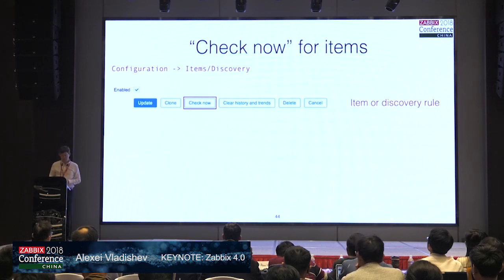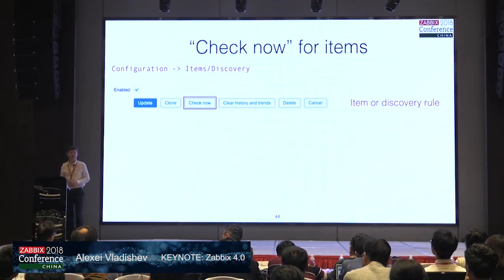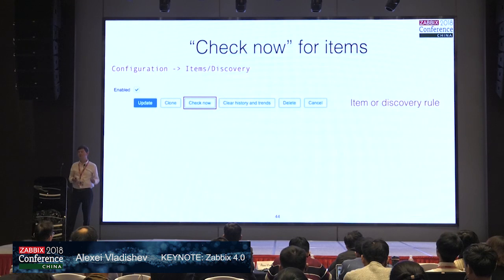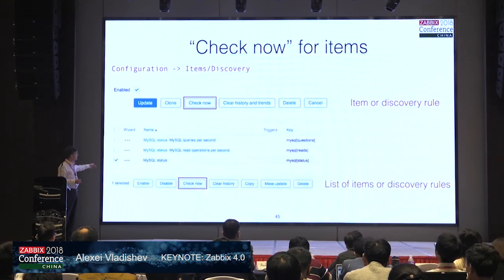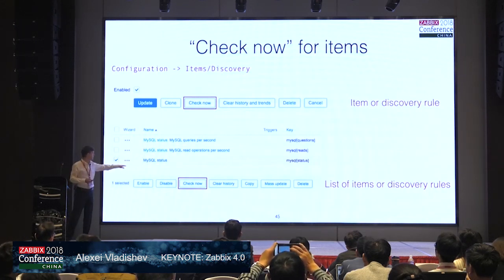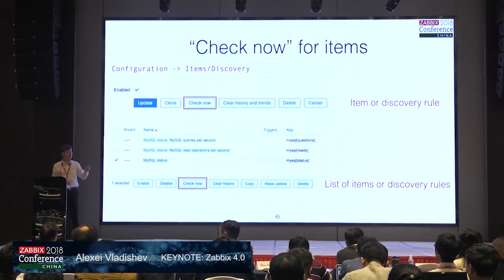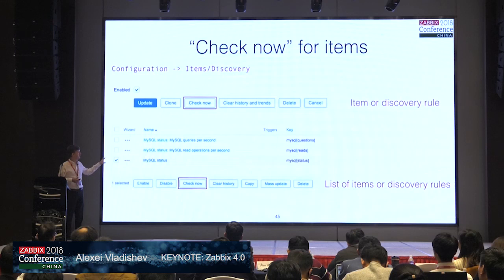In Zabbix 4.0 we introduced a Check Now button for items and for low-level discovery rules. If I want to force execution of an item or a low-level discovery rule, I can go to the Zabbix frontend, press the Check Now button, or select a number of items or low-level discovery rules and do a mass Check Now operation. Zabbix will force execution of those items. Please check the documentation as it has some limitations, but it's a really nice improvement.